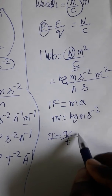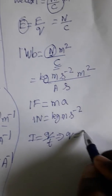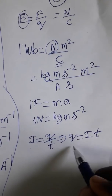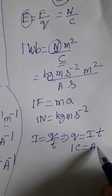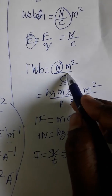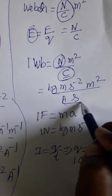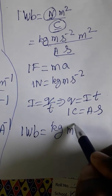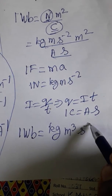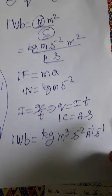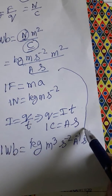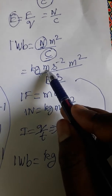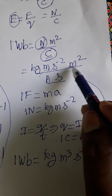Since charge equals current into time, coulombs equals ampere into second. Substituting, one Weber gives us kg·m³·s⁻²·A⁻¹·s⁻¹. So we have kg, meter cubed, second minus two, and ampere inverse second inverse.